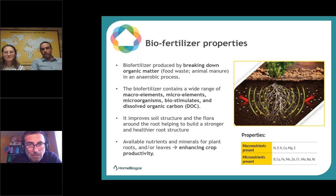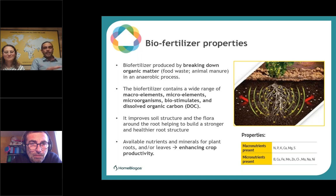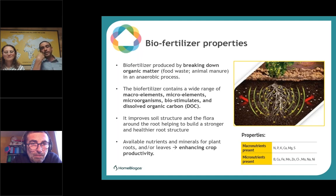Dissolved organic carbon is very important for soil structure and for the flora around the roots. Just as our stomach has probiotics and bacteria that help us absorb nutrients and stay healthy, the same thing happens around plant roots — bacteria and enzymes need good soil and good minerals to function. This is what we provide: all the available nutrients and minerals for the plant and roots, which enhances crop productivity. When we check all the elements in the bio-fertilizer, we really get all the micro and macronutrients the plant needs.